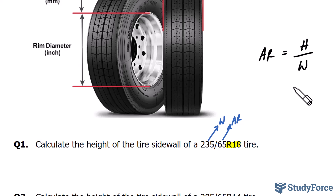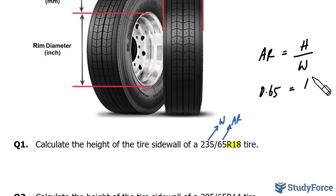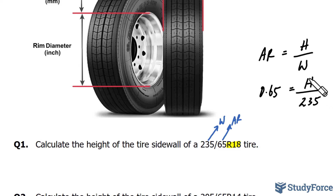Our aspect ratio is 65%, but we'll use the decimal version by dividing by 100, giving us 0.65. We don't know the height, so we'll leave H as it is, but we do know the width is 235 millimeters. We'll leave the units out because we know the height will be in millimeters as well. To find H, we simply multiply both sides by the common denominator 235 to isolate H.